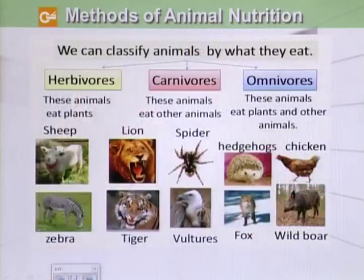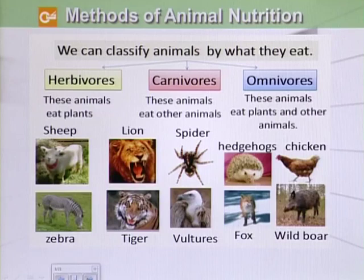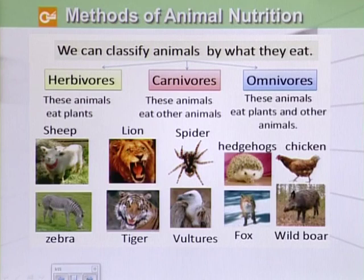We will classify animals by what they eat. Number one is herbivores — these are animals which eat plants. Examples are sheep and zebra. Then we have another class called carnivores, and these animals eat other animals. Examples include lion, spider, tiger, and vultures.